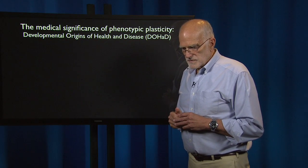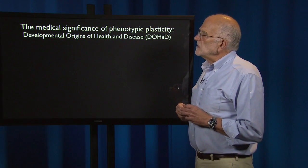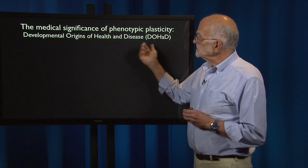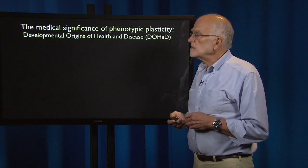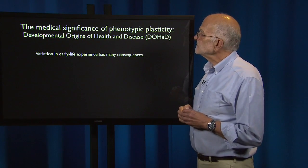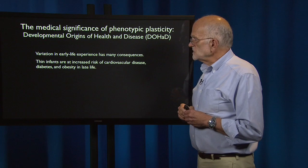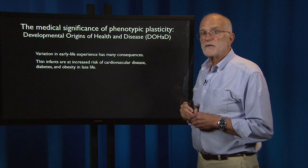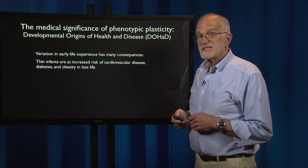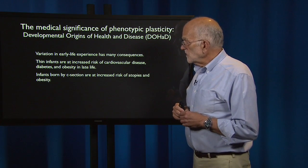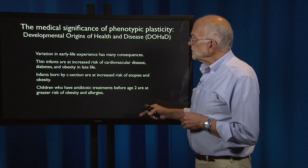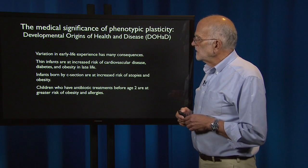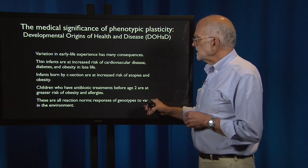What is the medical significance of phenotypic plasticity? One striking area is the developmental origins of health and disease — DOHAD — indicating that things that happen early in life have important consequences later. Thin infants are at increased risk of cardiovascular disease, diabetes, and obesity in late life. Exposure to starvation conditions in utero or very early after birth increases risk of these diseases 50 or 60 years later. Infants born by c-section are at increased risk of atopies and obesity. Children who have antibiotic treatments before age two are at greater risk of obesity and allergies, effects mediated by microbiota. These are all reaction norms.